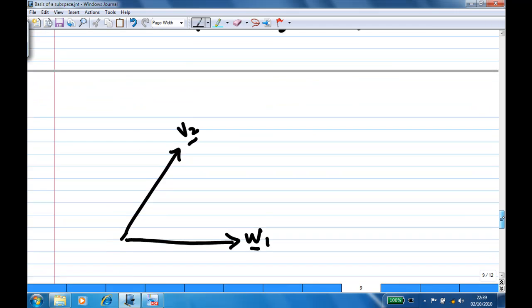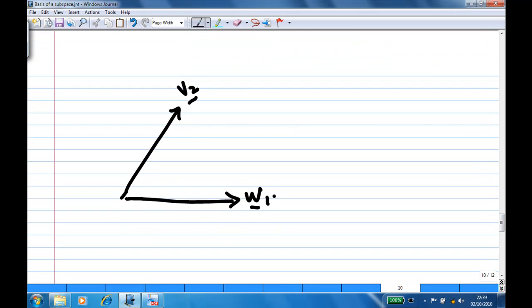In our case, w1, which is equal to v1. We have v2. What we are going to construct is w2. So w2 will be perpendicular to w1. This is our w2. And w2, we can find that this is actually v2 minus this vector, let's call it OA.